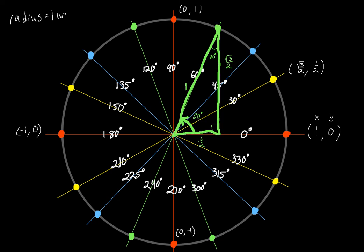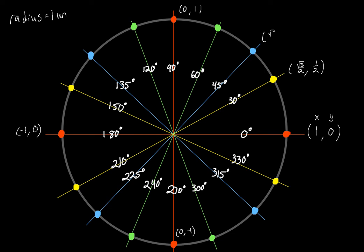Let's go ahead and fill these in cleanly. At 45°, the coordinate point is (√2/2, √2/2). At 60°, the coordinate point is (1/2, √3/2) — because in that 30-60-90 triangle, the x value was opposite the 30° angle.